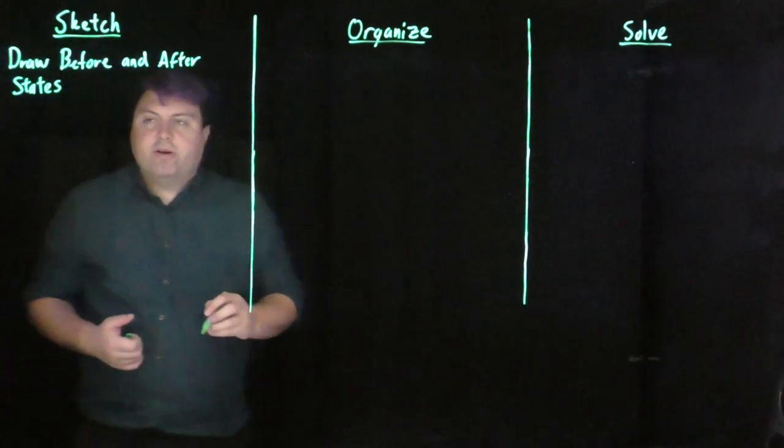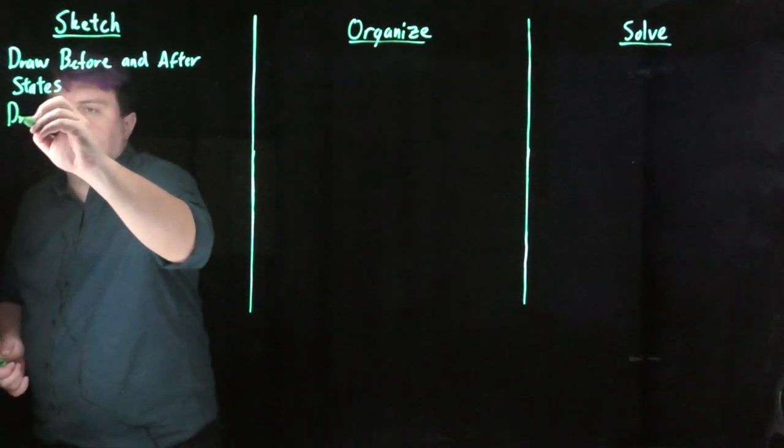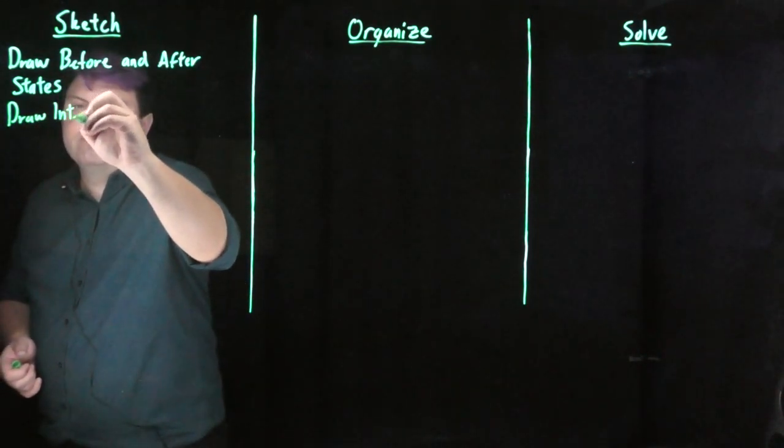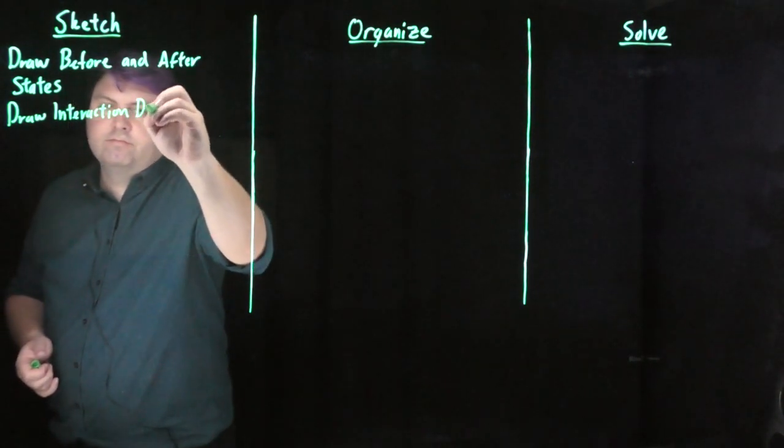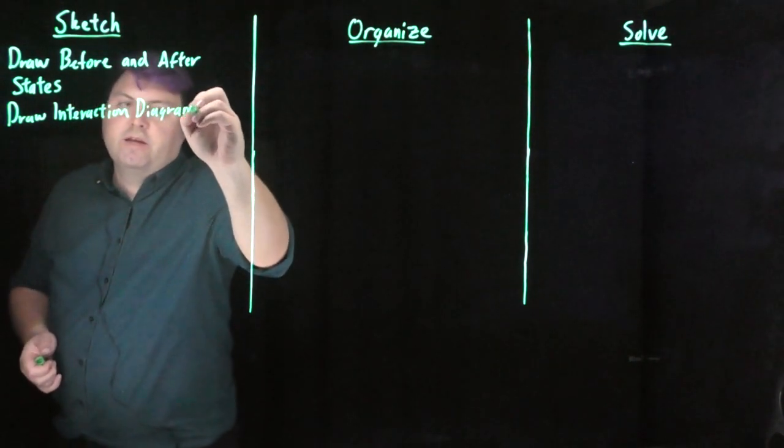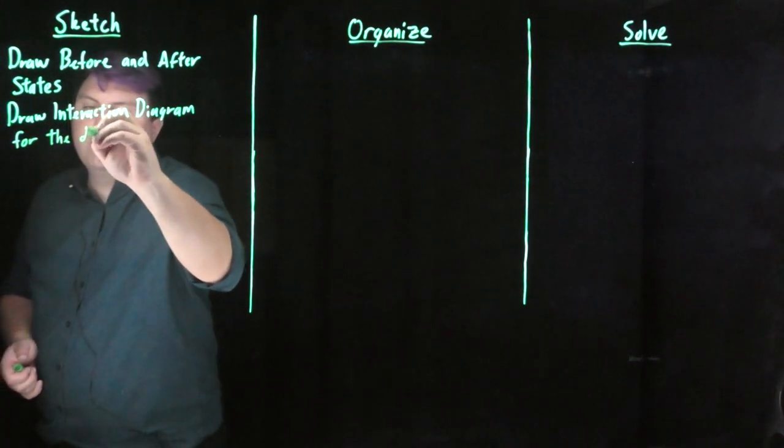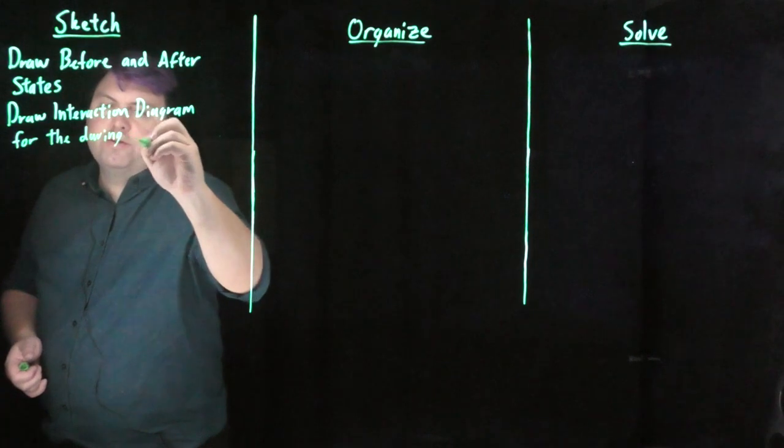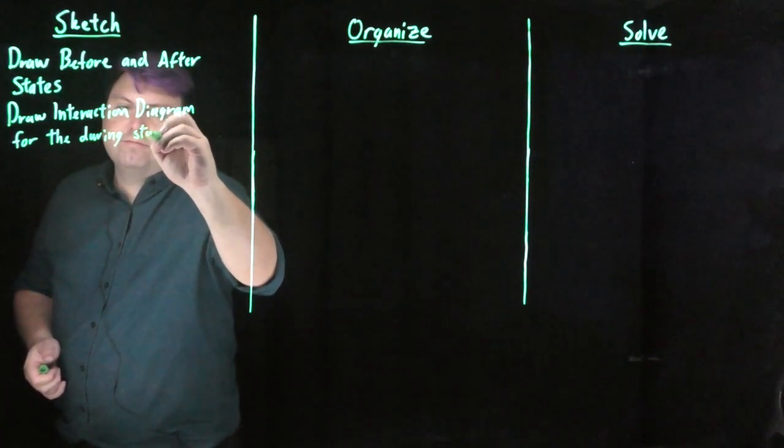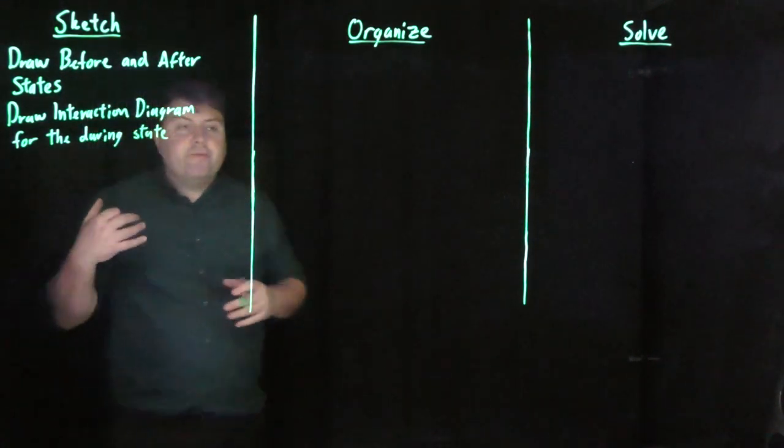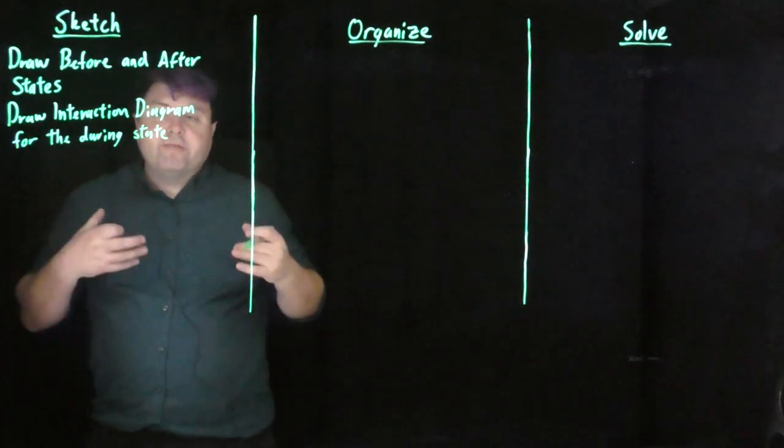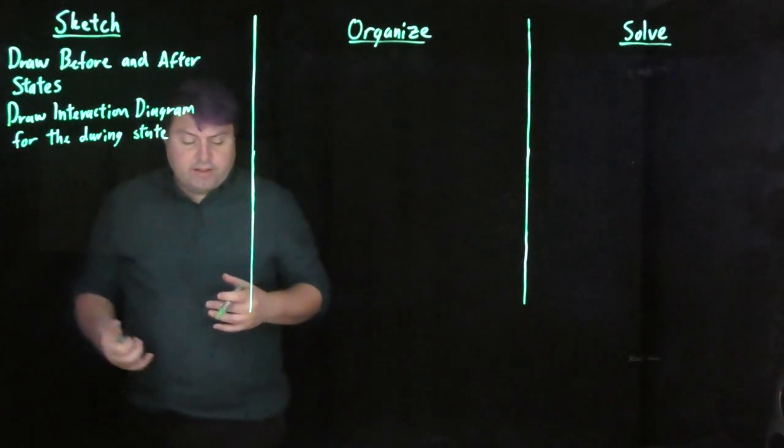Once we've done that, we want to draw our interaction diagram, and specifically want to draw it for the during state. So if we have an explosion, it's during the explosion. If we have a collision, it's during the collision, things of that sort.